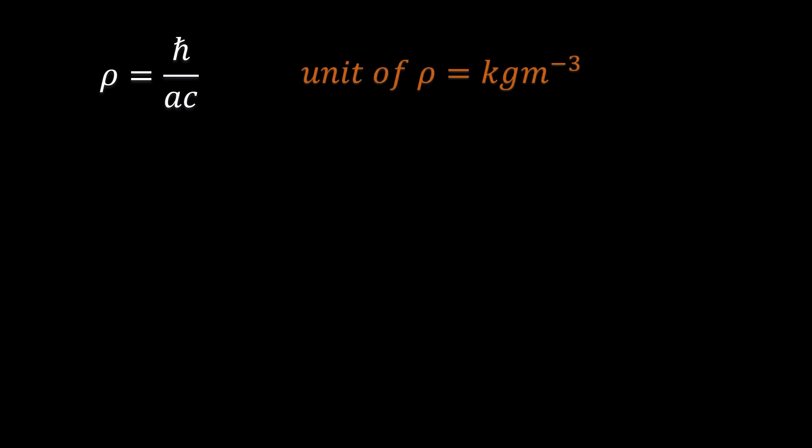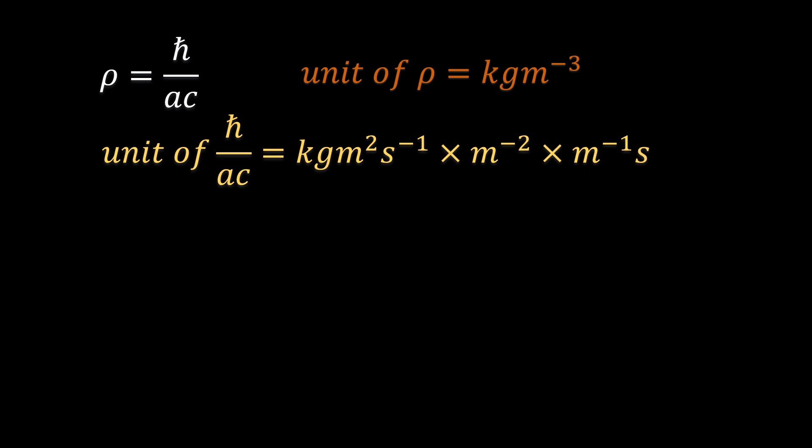Let's check if this equation is homogeneous. The unit of the left-hand side is kilograms per meter cubed, which is the unit of density. For the right-hand side, we get the unit of Planck's constant — joules second — which in base units is kilograms meter squared per second, divided by the unit of area, which is meter squared, divided by the unit of speed, meters per second.